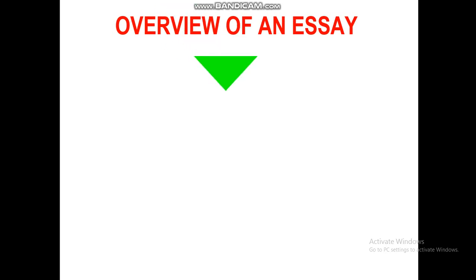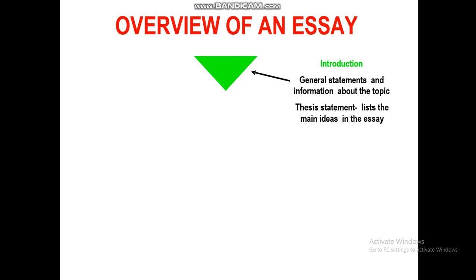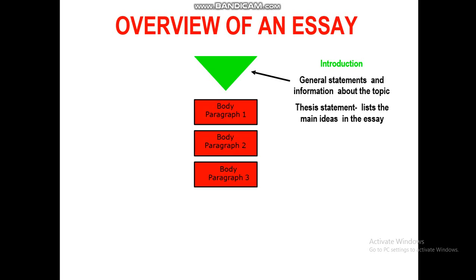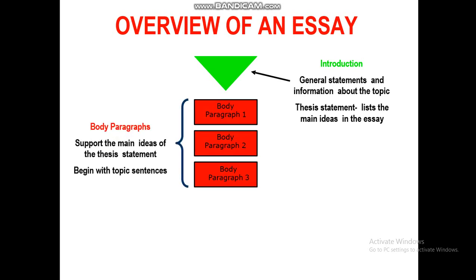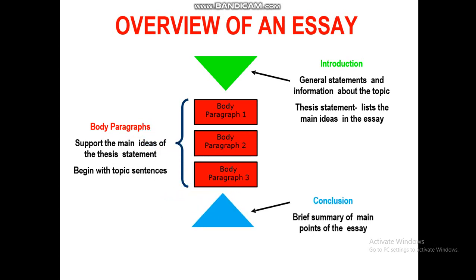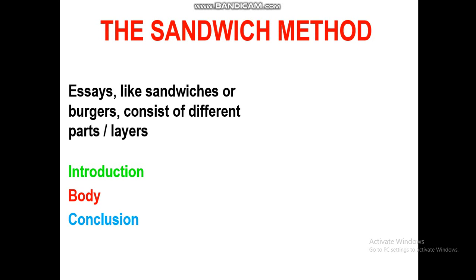Let's have an overview of an essay. Firstly, the first part is the introduction, where we have some general statements and information about the topic, and also the thesis statement that lists the main ideas in the essay. The body consists of three paragraphs — the body paragraphs support the main ideas of the thesis statement and begin with topic sentences. The last part is the conclusion, in which we offer a brief summary of the main points. Essays, like sandwiches or burgers, consist of different parts or layers: introduction, body, and conclusion.